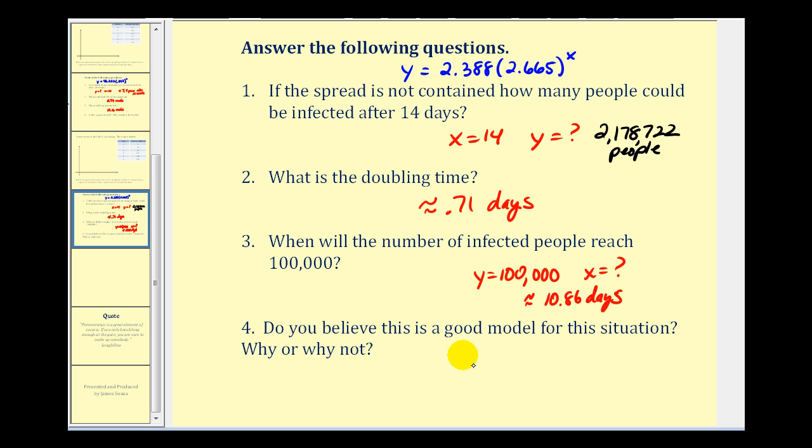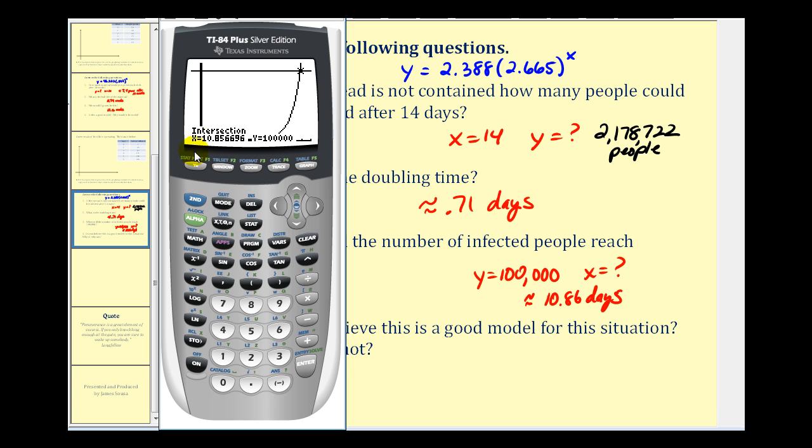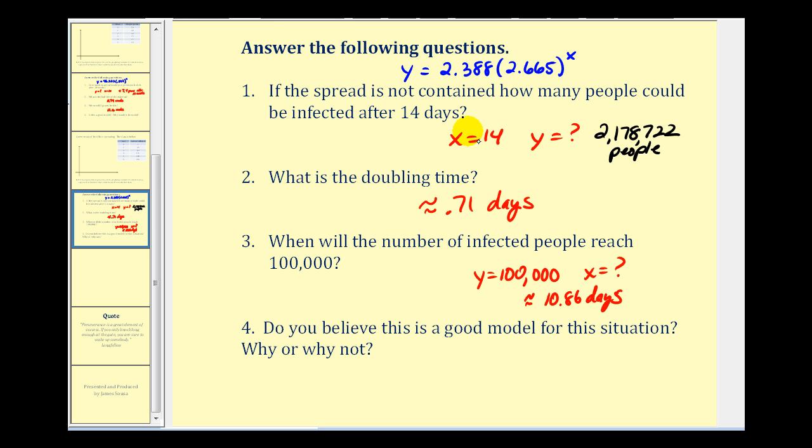The last question, do you believe this is a good model for this situation? Why or why not? Well, we said earlier that r squared is approximately .91. So approximately 91 percent of the variability of the data could be explained using this model. However, we only had data for the first six days. So making a prediction at let's say 14 days is way outside the given data and therefore there's probably going to be the possibility of a larger margin of error. So I'll go ahead and leave this for you to think about. I hope you found this helpful and thank you for watching.